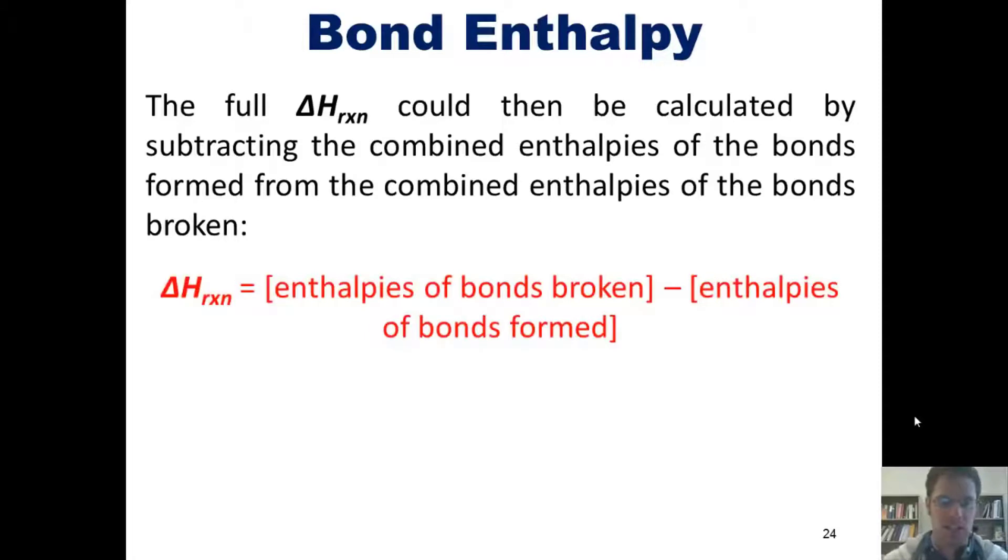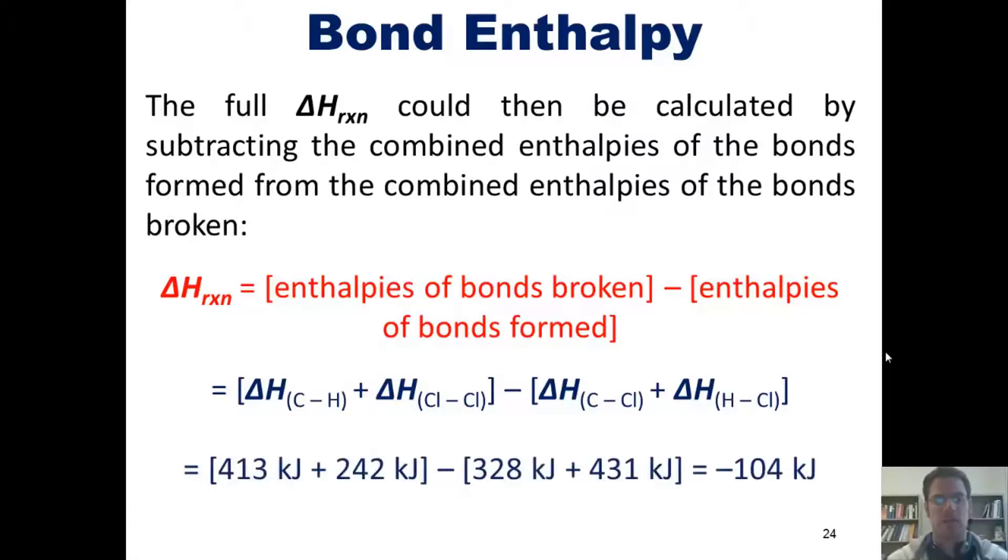For our previous example, that would be the sum of the enthalpies of a carbon-hydrogen bond and a chlorine-chlorine bond, and then subtracting from that the combined enthalpies of a carbon-chlorine bond and a hydrogen-chlorine bond. Using the table I showed you before, we can get those numbers as being the following, and determine that the overall delta H for this reaction is negative 104 kilojoules, which means that it's an exothermic reaction.